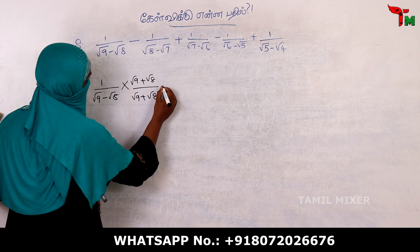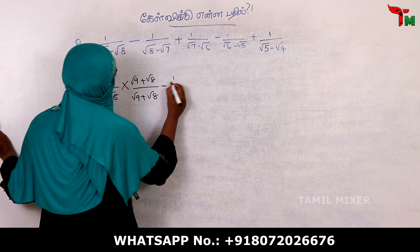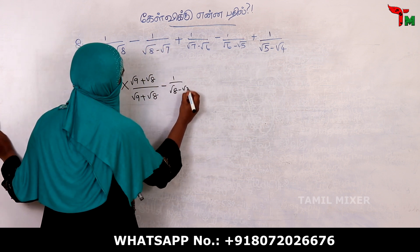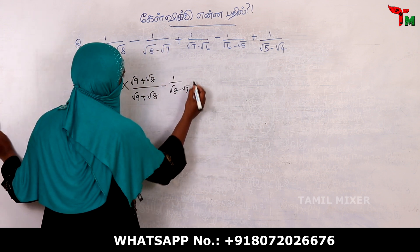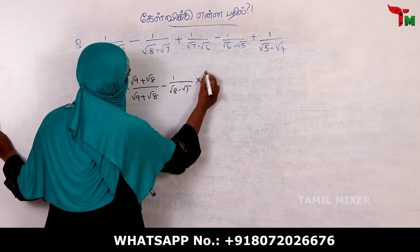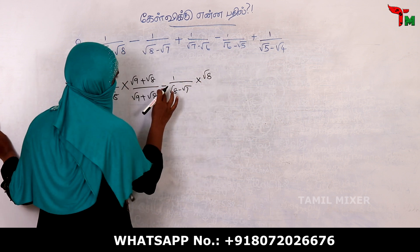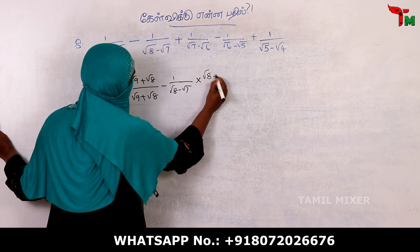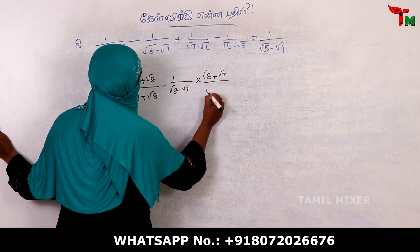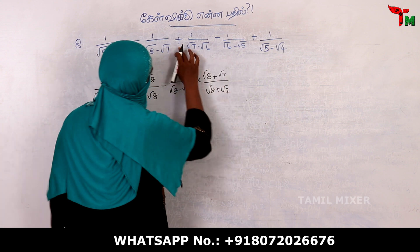Okay, so let's take 1 by root 8 minus root 7, and now we multiply by the conjugate: root 8 plus root 7, divided by root 8 plus root 7.